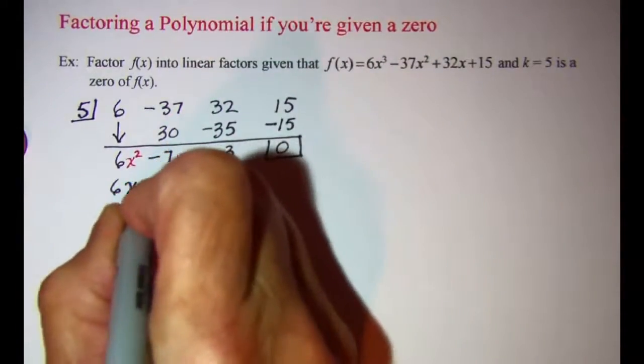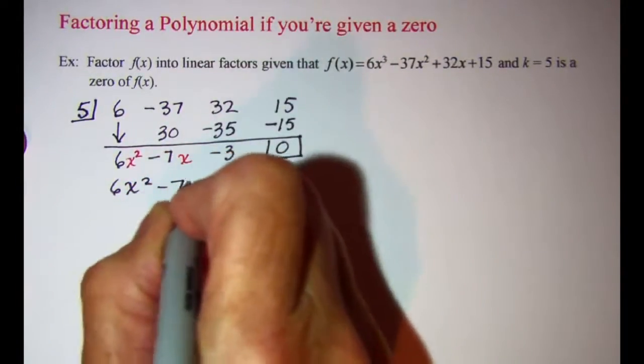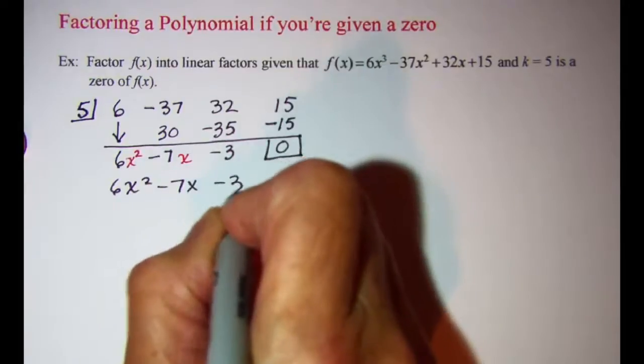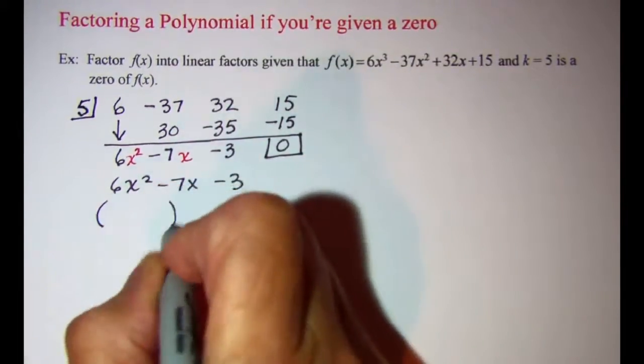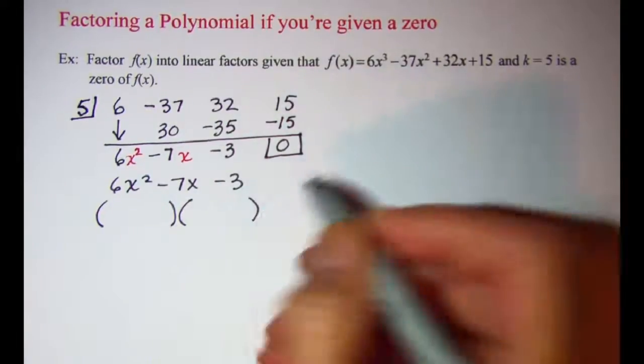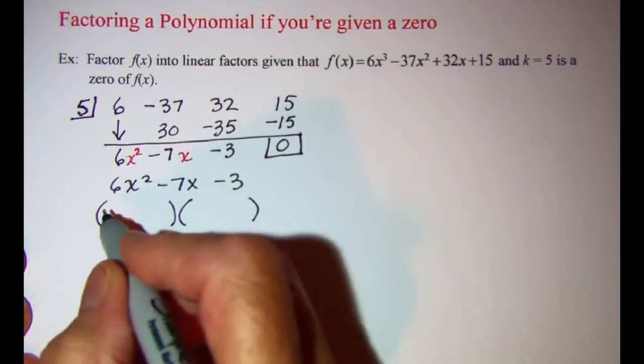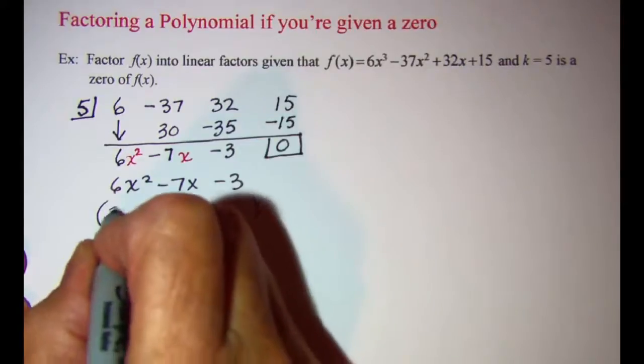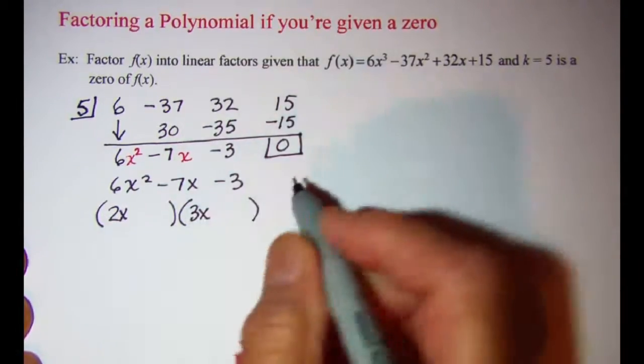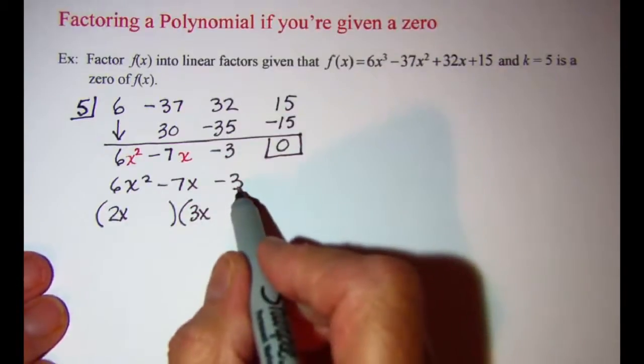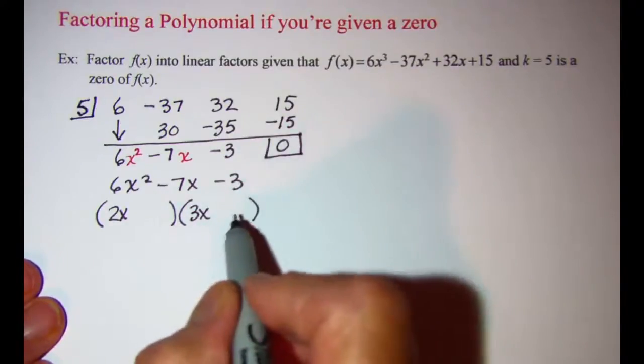Now let's factor 6x squared minus 7x minus 3. I'll have a 2x and a 3x. And then I need 3 times 1 for my second numbers.